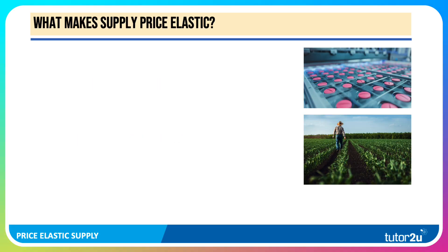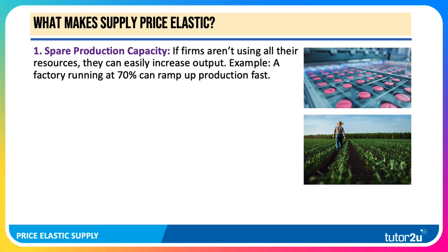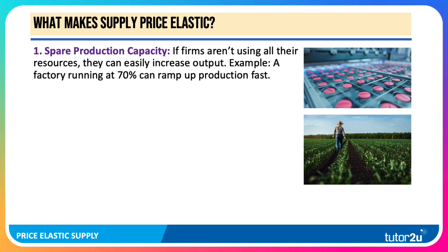So what tends to make supply price elastic? First of all, spare production capacity. If a business isn't using all of their resources — their factory space, for example — they can quite easily ramp up production. A factory running at 70% capacity has 30% spare capacity to utilise.